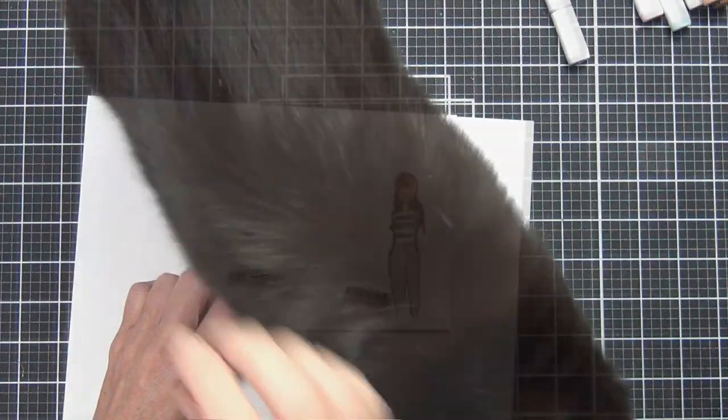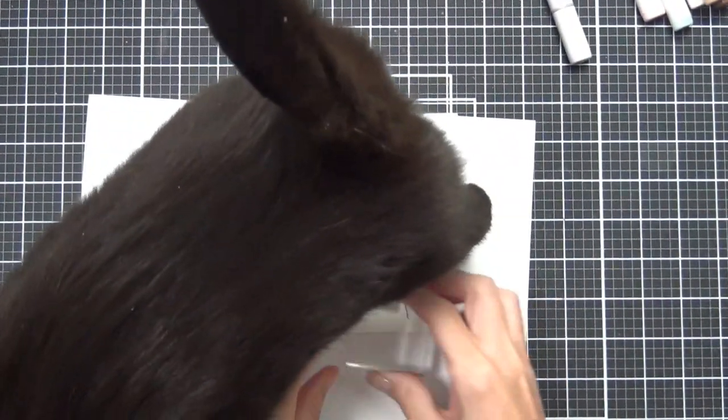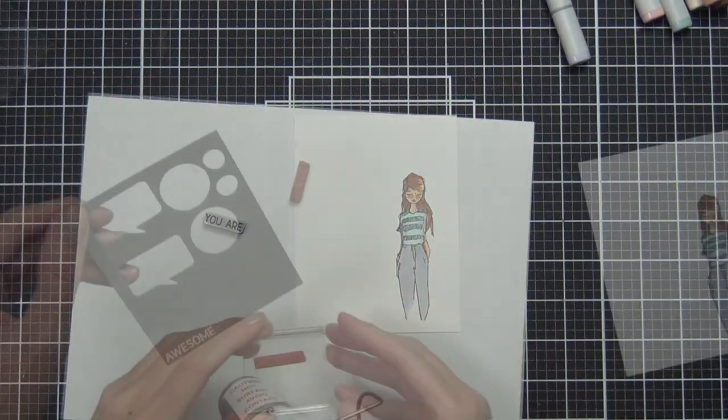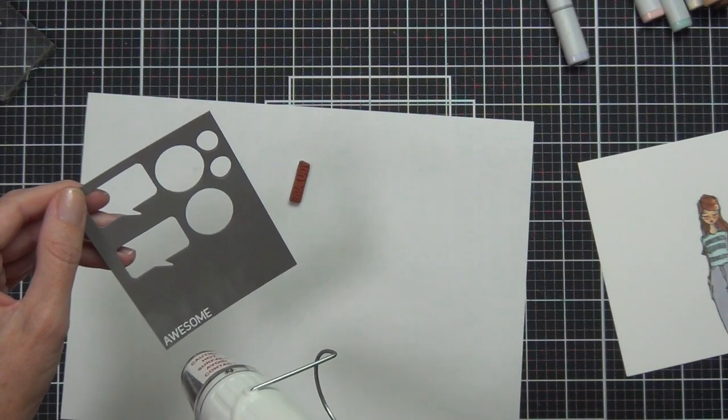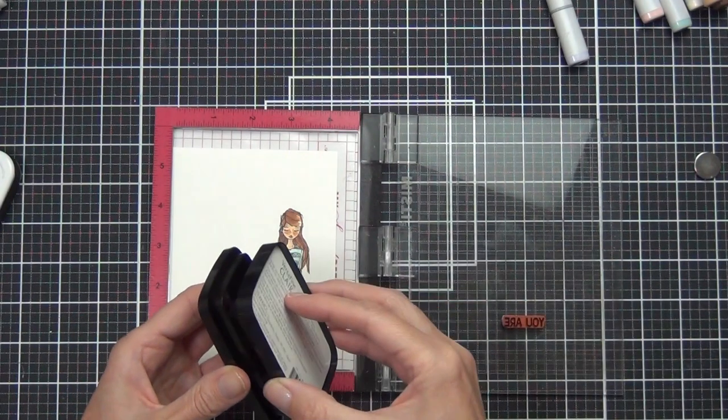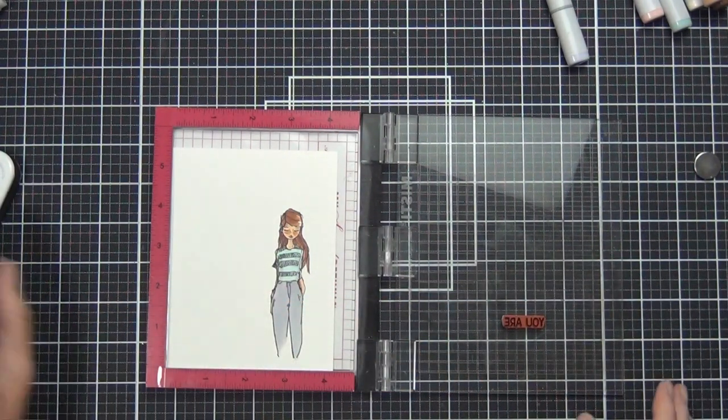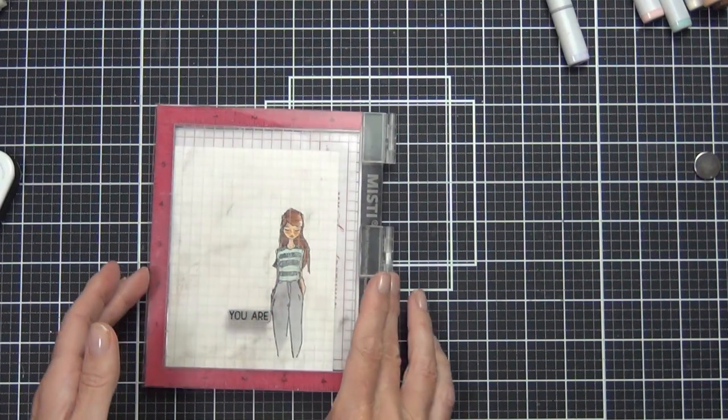I have got a sentiment set here which is from the Fun Stampers Journey Letter Board Minis set. This is a really versatile set because it's got a nice basic font and some really good sentiments in it, and you can mix it up with other stamps or dies that you may already have as well.